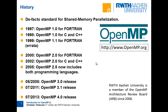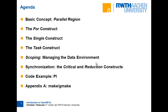OpenMP 4.0 includes vectorization constructs, but the most prominent new feature was support for accelerators via the target construct. The goal of OpenMP 4.0 is to take the large standard for expressing parallelism and — with this target construct — allow those features to apply to accelerators as well. So everything you learn today can also be applied to accelerator programming, which will be discussed tomorrow.